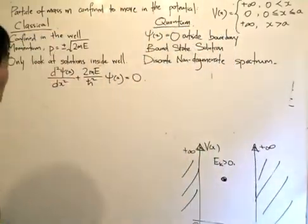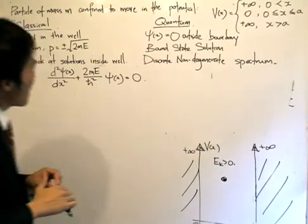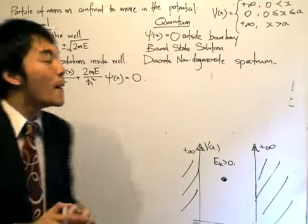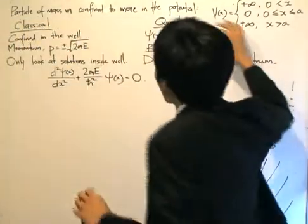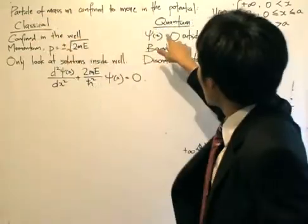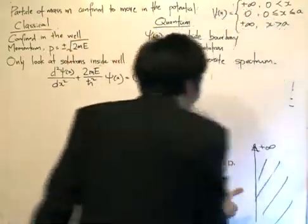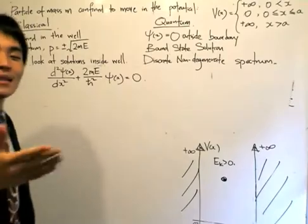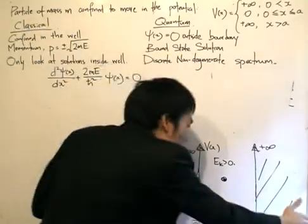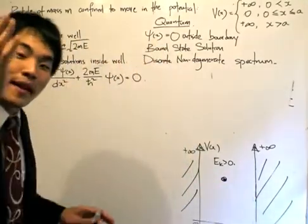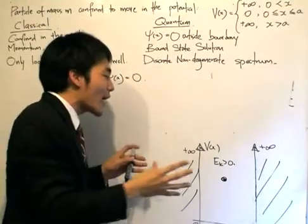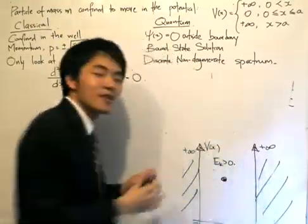Now what do we get in the quantum picture? The first thing to say — and this may be a bit hard to accept for now — is that the wave function equals zero outside the boundary. This statement parallels the classical confinement, with the exception that inside the well we have a probabilistic determination of where the particle is, which is why we need a wave function. But outside the well, the wave function is also equal to zero, implying that the particle has no right to be in regions where the potential equals infinity.